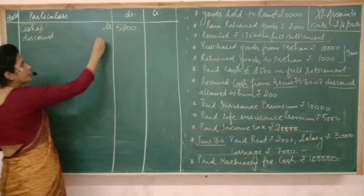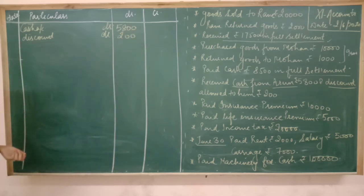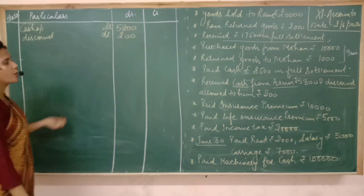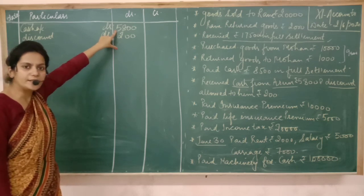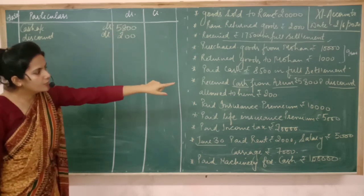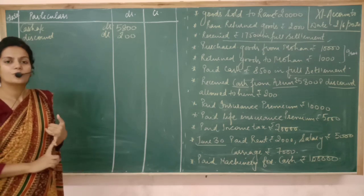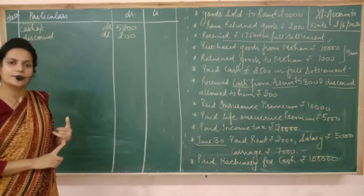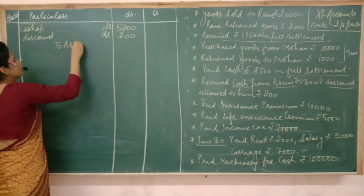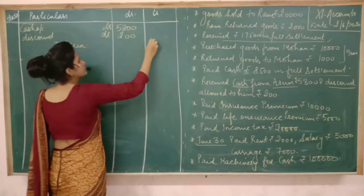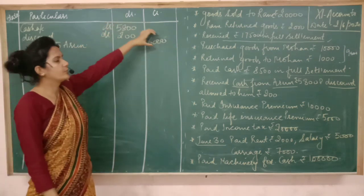You are taking 200 rupees less from Arun — you had to take 6000 from Arun but have taken only 5800. Now, who is going to give you the money? Arun — again a personal account. The rule says debit the receiver, credit the giver. Write 6000 on the credit side. The total of the debit side should equal the credit side.